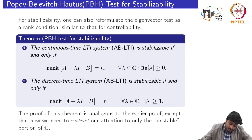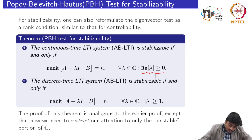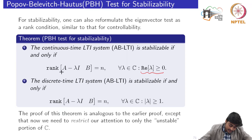If you recall the result for controllability, this condition was not there while testing the rank condition. But for stabilizability, as we had seen in the eigenvector test, we are only concerned with the eigenvalues which are on the right-hand side. So again, for stabilizability we are concerned with the eigenvalues on the right-hand side.